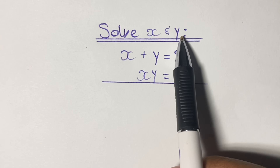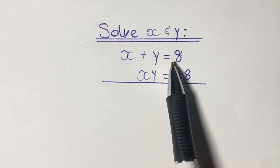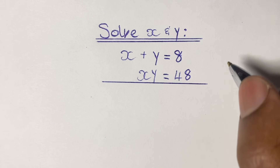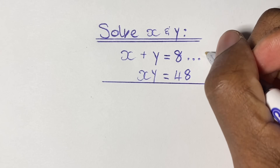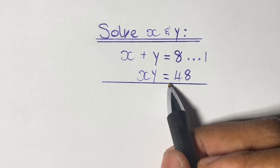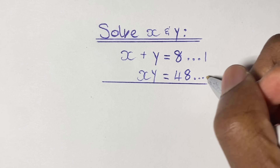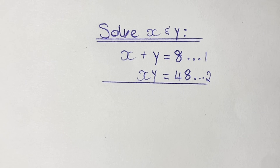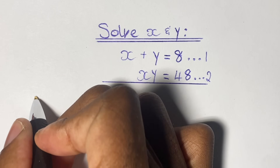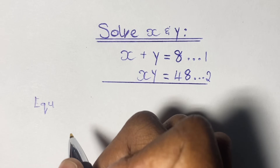Greetings again everyone. Here we have another complex simultaneous equation to solve. We have x plus y equals 8, which is equation 1, and x times y equals 48, which is equation 2. As you can see, our solution for x and y is going to be complex, so please stay tuned to the end of this video.